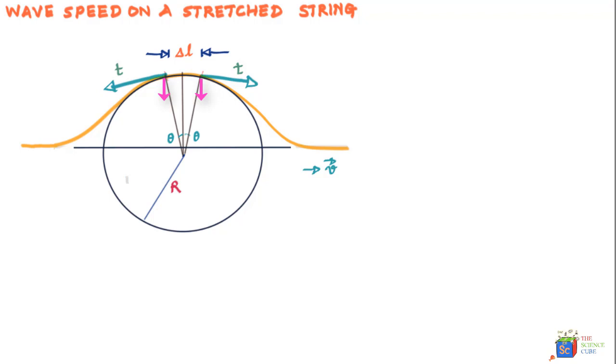You might say it's not really directing towards the center, but the angle we've taken looks too large. If this angle is small enough, if it converges to a very small value, you'll find that the vertical component will also start converging towards the center of the circle.